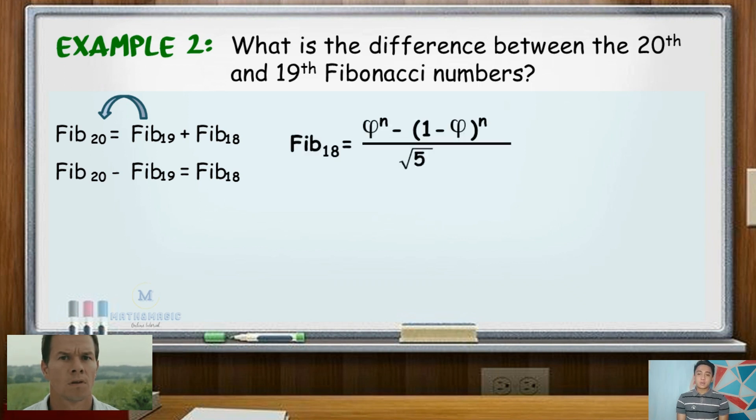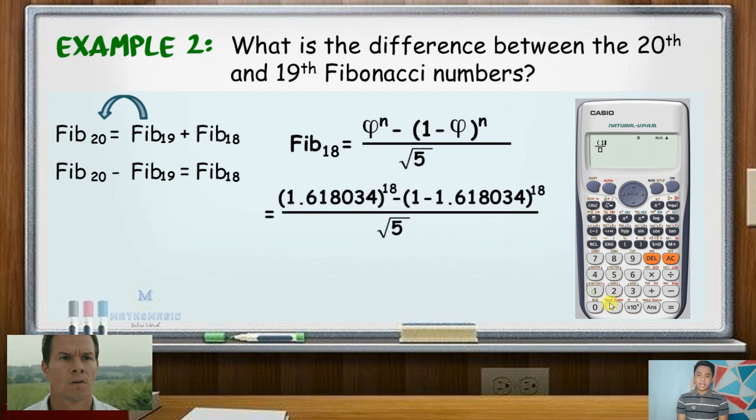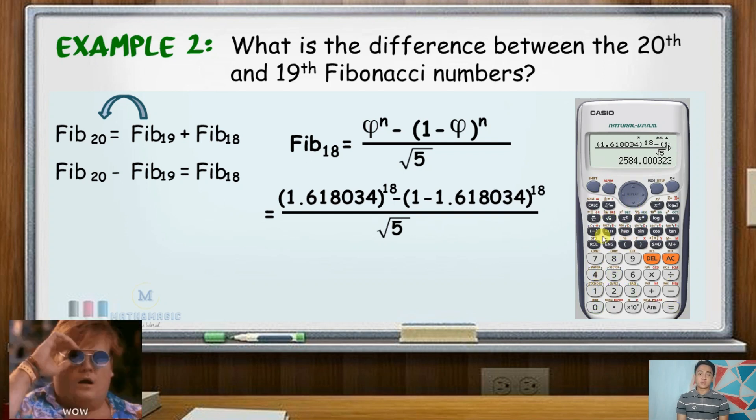Solving, Fib_18 equals quantity 1.618034 raised to 18 minus the 18th power of 1 minus 1.618034, all over square root of 5. So that will be equal to 2,584.